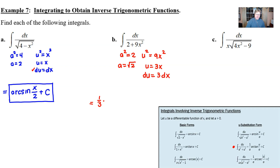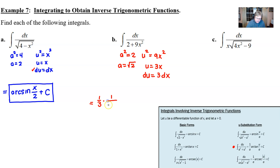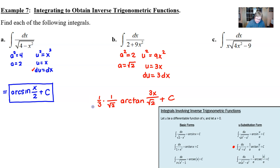We have one third times the integral of du over a squared plus u squared. The arc tan form has a one over a in front of it, as does the arc secant — but notice the arc sine does not. That's one other thing you'll need to remember when memorizing these forms. We have our arc tan, then put u on top, a on the bottom, and plus C. You could get a common denominator if you wanted, but this will suffice for the answer.